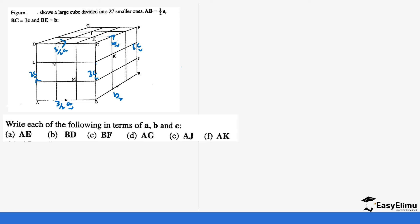Let's work out the question. We need to find vector AE - there's a diagonal cutting through to E and the direction is from A to E. To move from A to E we go from A to B, then plus BE. We know AB = 3/2a and BE = b, so our answer is 3/2a + b. The second question is BD.